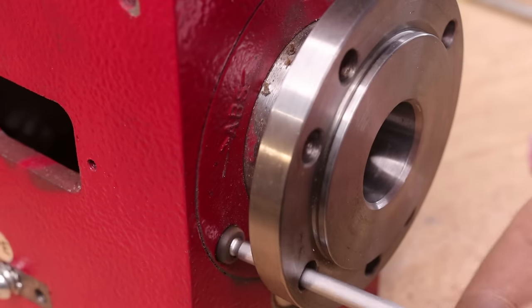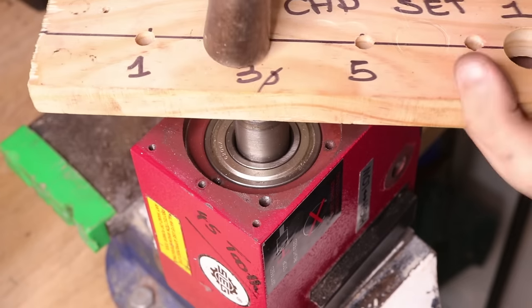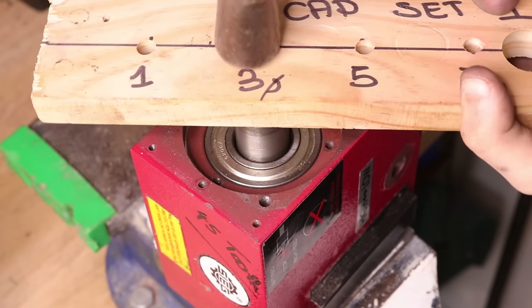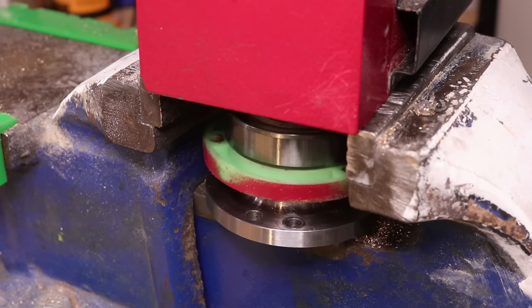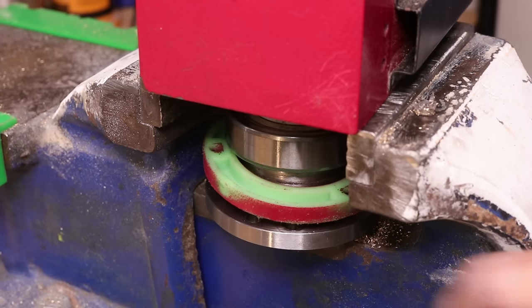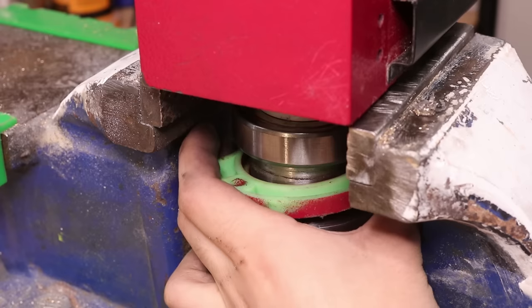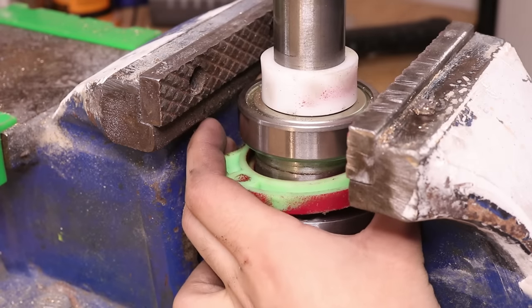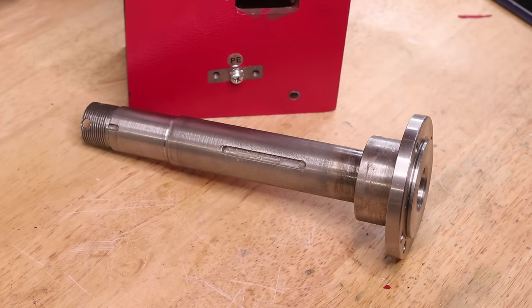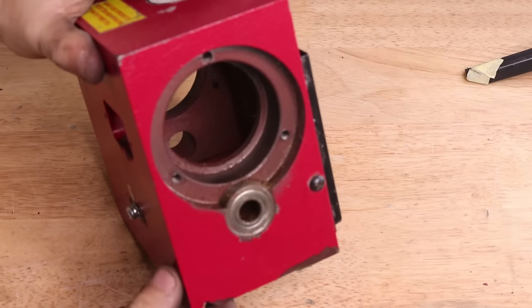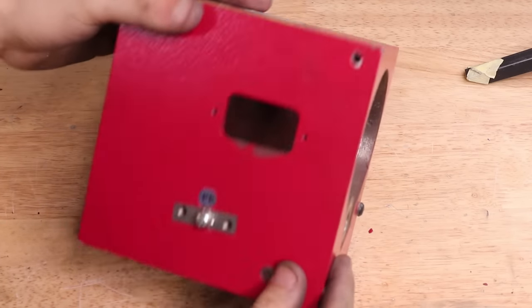Now at times like this, having a press and a bearing puller would be really helpful. But if you're like me and don't own one, placing the spindle housing between two vice jaws and hammering the end with a hammer and a piece of wood will do a fine job of removing the spindle and bearings. Once we're done, we should have a spindle and a housing with no bearings on them.